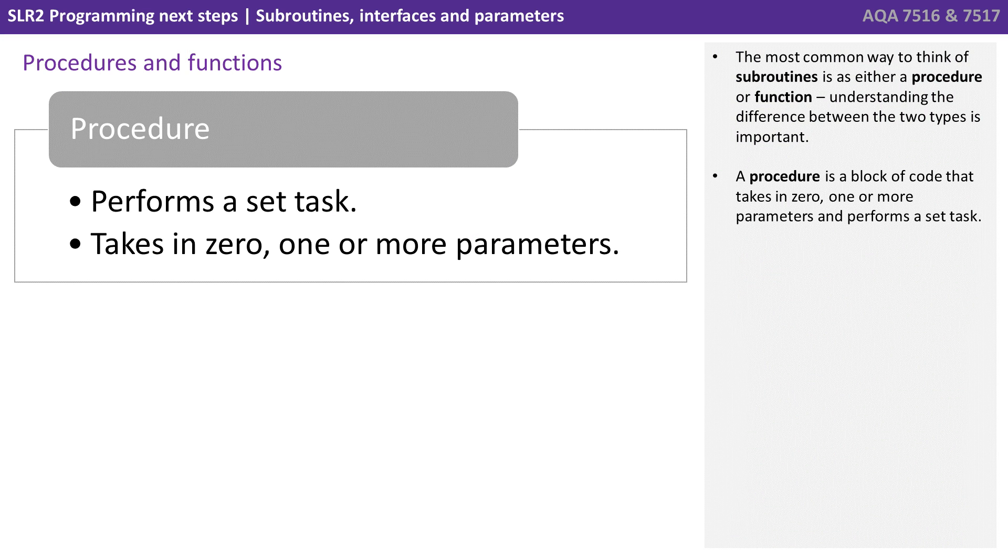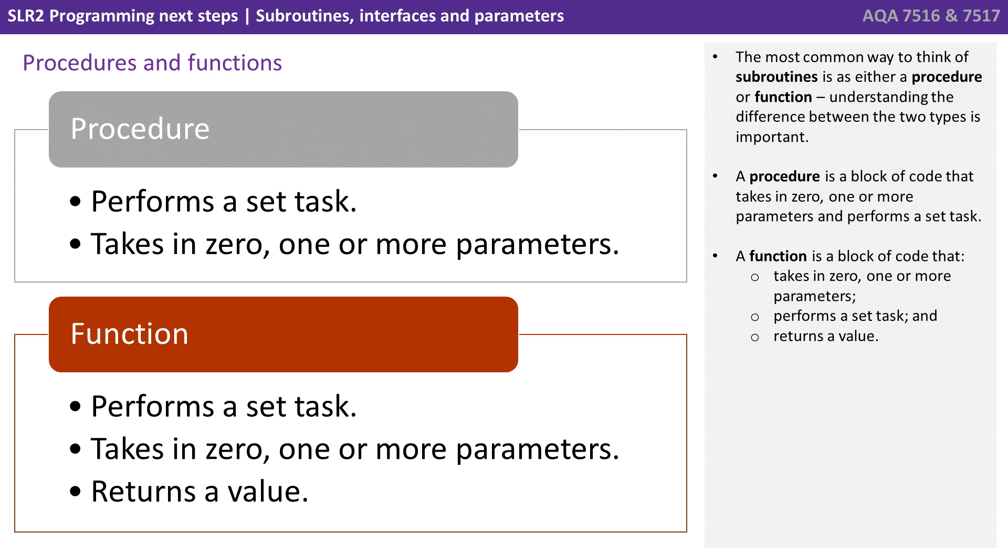A procedure is a block of code that takes in zero, one or more parameters and performs a set task. A function on the other hand is a block of code that takes in zero, one or more parameters, performs a set task and returns a value.